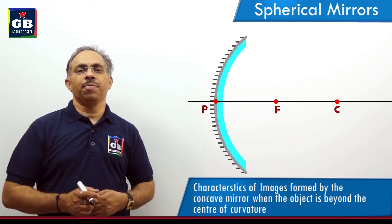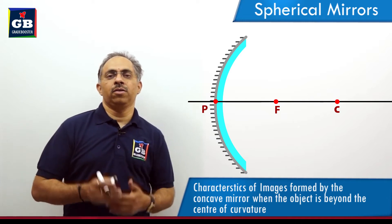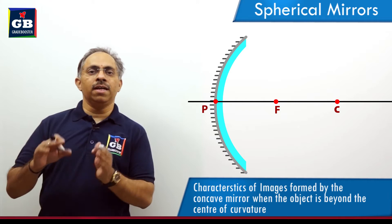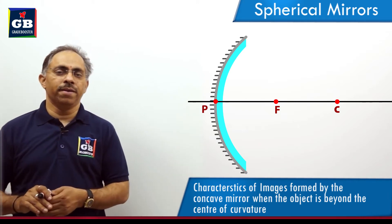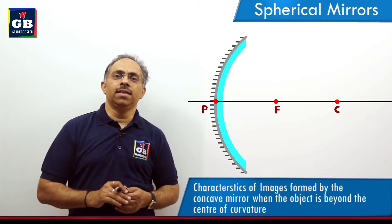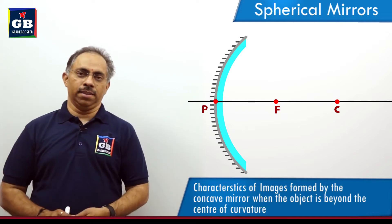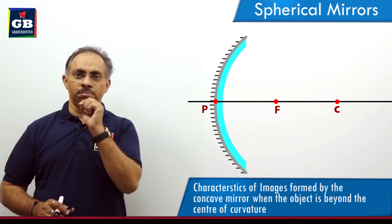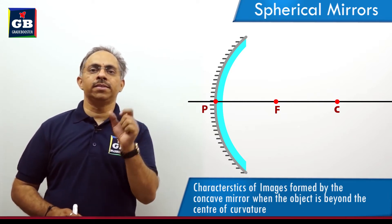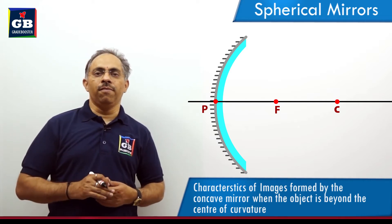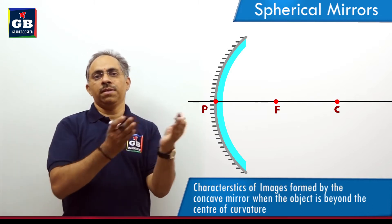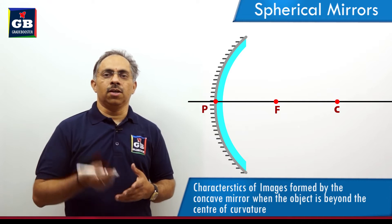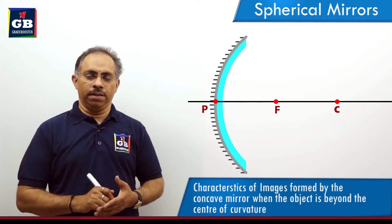Another position to consider is when we bring the object closer towards the mirror and place it at a distance beyond the center of curvature. The object is not at infinite distance, but beyond center of curvature, meaning the object distance is greater than the radius of curvature. We consider two rays coming from one particular point on the object, then determine where after reflection these two divergent rays will coincide. The object distance is greater than the radius of curvature R.